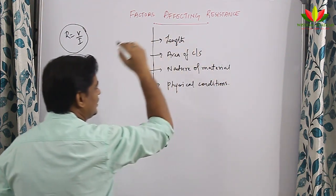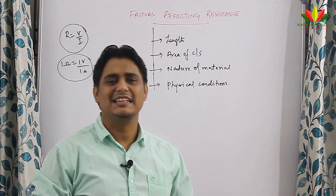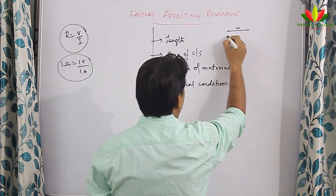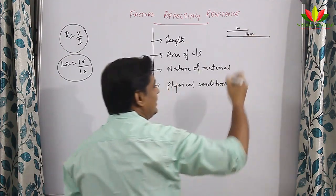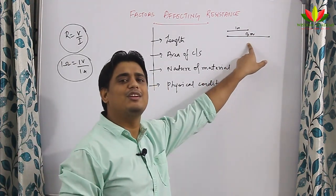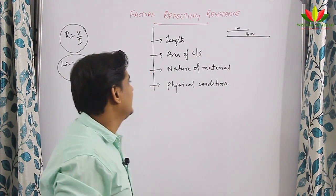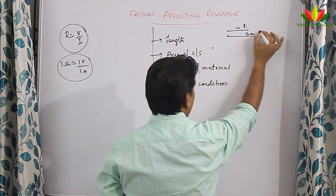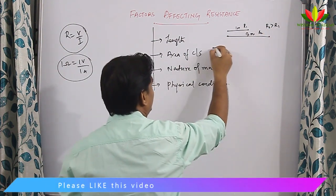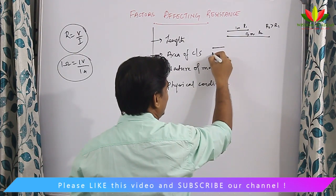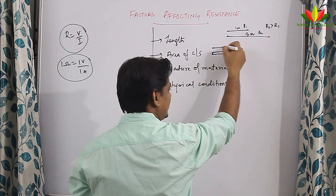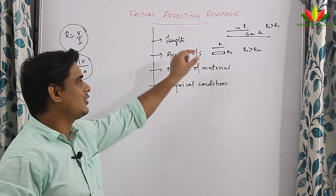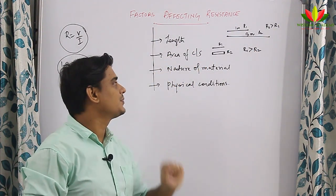If I talk about length, it is found that as the length of the wire is increased, its resistance also increases. Suppose I have one meter of wire and I have three meters of wire — the three-meter wire will have more resistance than the one-meter wire. It was also found that resistance is inversely proportional to area of cross-section. If there are two wires of the same length, one of less area and one of higher area, R1 is more than R2 — as the area of cross-section increases, the resistance gets reduced.